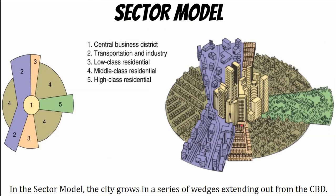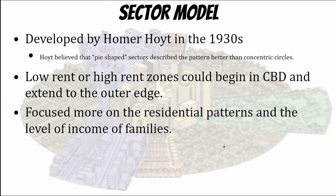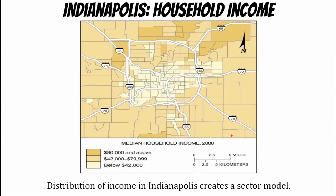Then it transformed into the sector model. The sector model has less concentric rings and more wedges. The CBD is still prominent, but because of the growth of factories and transportation, this model — described by Homer Hoyt in the 1930s — shows people starting to expand outward with new residential patterns in different income classes: low, middle, and high. You can see the sector model displayed in Indianapolis as well.